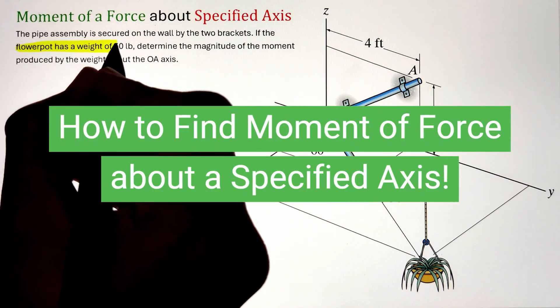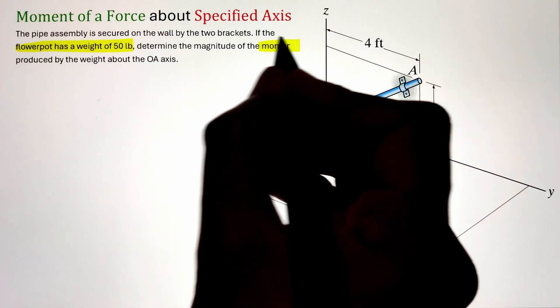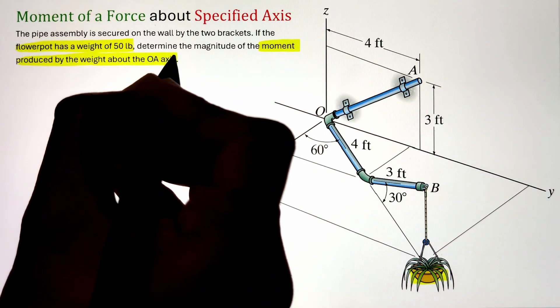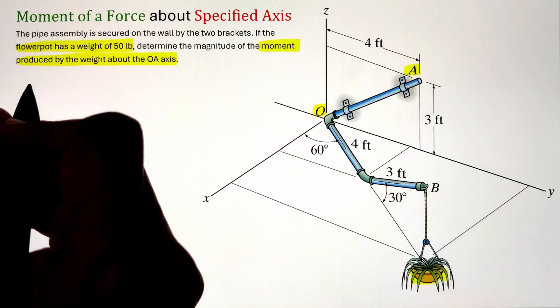In order to find the moment the weight of the flower pot creates about the axis of the pipe OA that is held by two brackets as shown in the figure, we can write our scalar triple product.